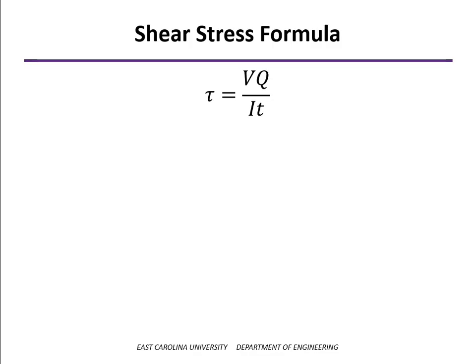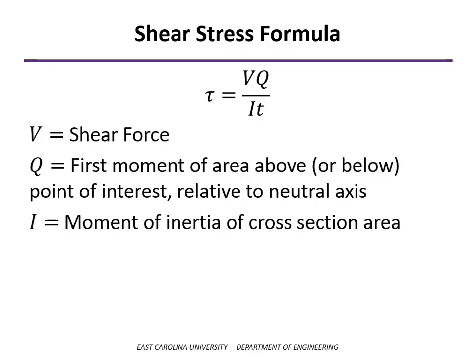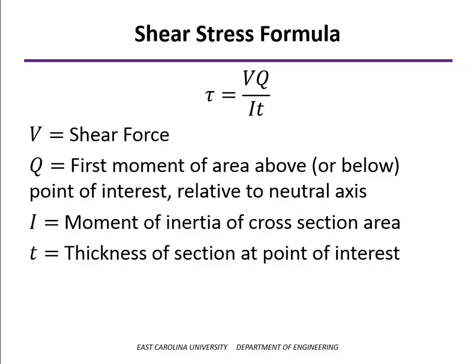Our shear stress formula is τ = VQ/IT, where V is the shear force from the shear diagram, Q is the first moment of area — that is, the area times the distance from the centroid of that area to the neutral axis. The area used depends on where we want to calculate the shear stress: we use all the area either above or below that point. I is the moment of inertia of the entire cross section, and t is the thickness. Built into this formula is the assumption that shear stress is constant across the thickness at that height.